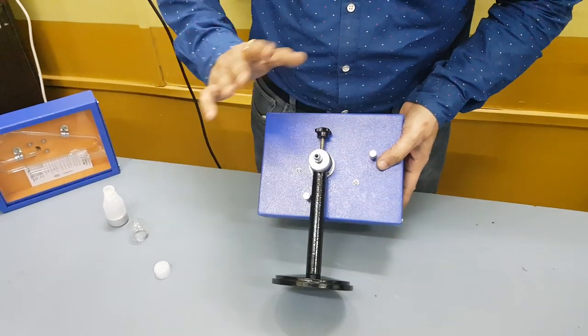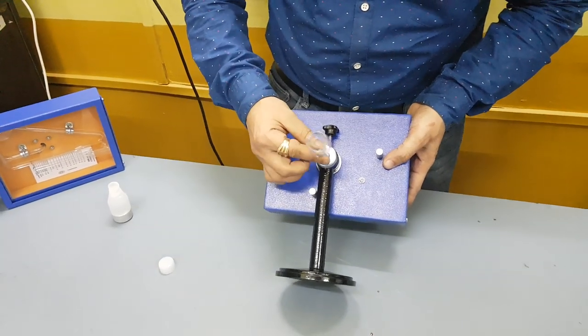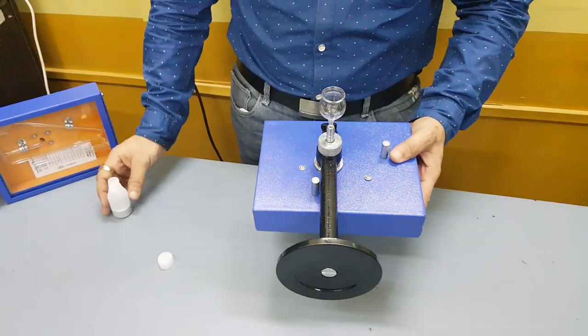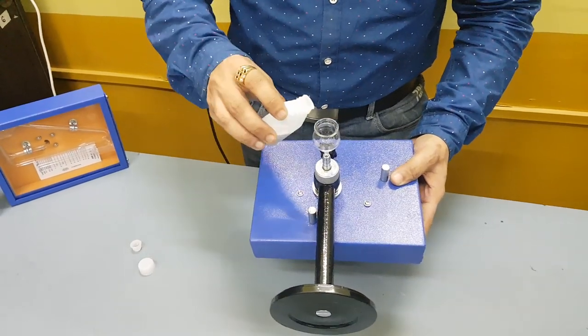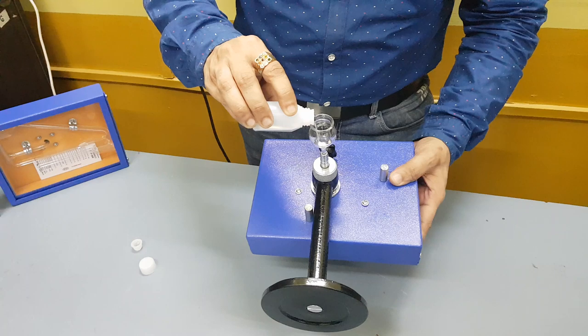Rotate it, hold it in this place, insert the funnel, tilt it. There is a cap provided, remove the cap, gradually add mercury inside.